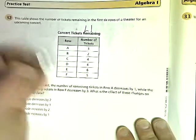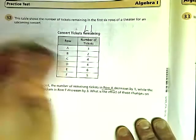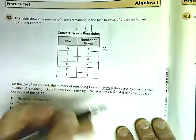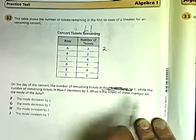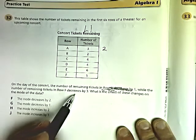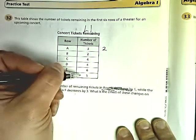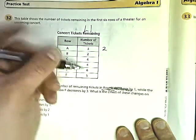So these are tickets remaining. So in row A, decrease by 1. So if it goes down by 1, this goes to 2. So I'm going to mark that out. The number of tickets remaining in row F decreases by 3. So what became 5 now goes down to 2. So somebody bought those tickets.